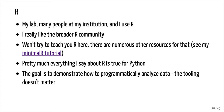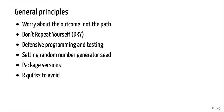My goal in this tutorial is to demonstrate how we can programmatically analyze data. There are some general principles I want to go over: worrying about the outcome not the path, don't repeat yourself (DRY), defensive programming and testing, setting the random number generator seed, package versions, and some R quirks to avoid.